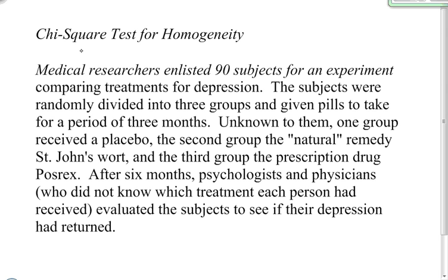In this video I want to go through a chi-squared test for homogeneity. Medical researchers enlisted 90 subjects for an experiment comparing treatments for depression. The subjects were randomly divided into three groups and given pills to take for three months. Unknown to them, one group received a placebo, the second received the natural remedy St. John's Wort, and the third received the prescription drug POSREX. After six months, psychologists and physicians evaluated the subjects to see if their depression had returned.